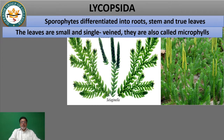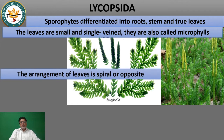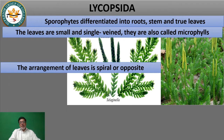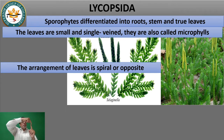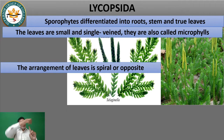The leaves have an opposite arrangement or a spiral arrangement. They are also found in spiral shape. These various arrangements — opposite and spiral — are present in members of Lycopsida.